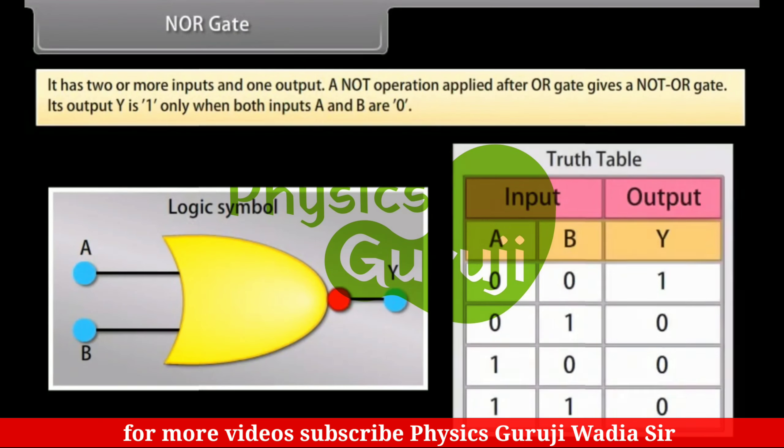NOR-Gate: It has two or more inputs and one output. A NOT-operation applied after OR-Gate gives a NOT-OR-Gate. Its output Y is one only when both inputs A and B are zero.